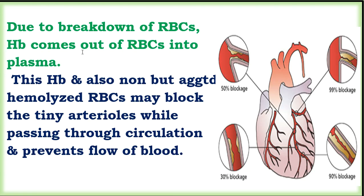Due to breakdown of RBCs, hemoglobin comes out of the RBCs into plasma. Non-agglutinated hemolyzed RBCs may block the small arterioles while passing through the circulation and prevent flow of blood. There is blockage — 30% blockage in the blood circulation, 50% blockage in the blood vessel, and TNA block causing further blockage.